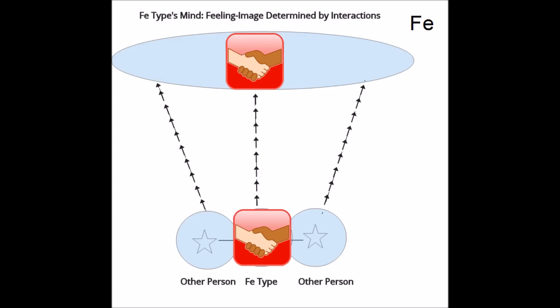Hence, in my FE diagram, the subject is in much closer proximity to others than in my TI diagram. The TI type could not move closer to other people even if he wanted to, since the impersonal principle has determined a fixed distance between all.